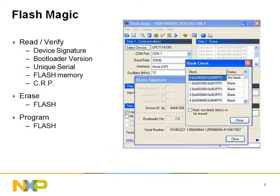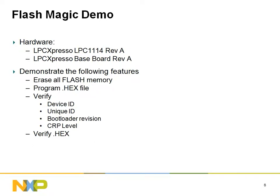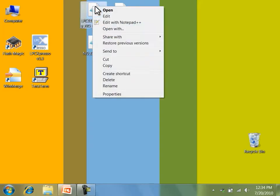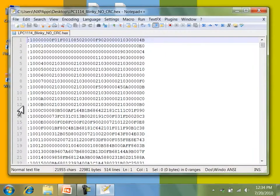FlashMagic can do all of the operations supported by the ISP mode of the 1100 and 1300 parts. I will now demonstrate how to use FlashMagic to program a simple application. My hardware setup consists of a baseboard and an LPC-1114 evaluation board. I'll be using a previously generated hex file as my program, which simply blinks an LED. I'm going to preemptively focus on a portion of memory on the input hex file that I'll be programming the device with. The significance of this address will be shown later in the presentation.